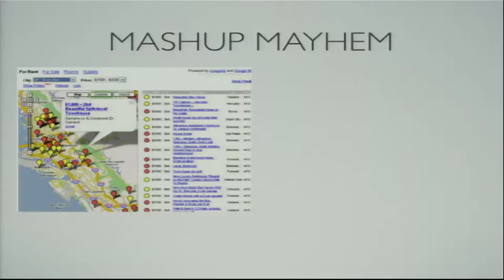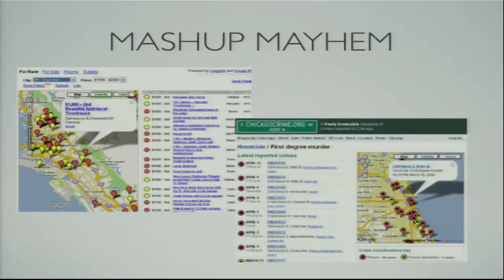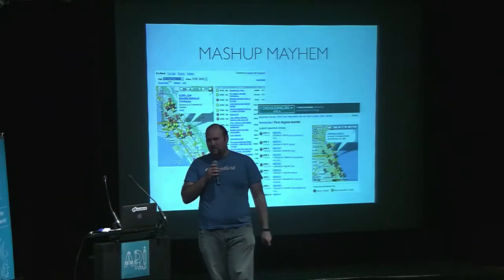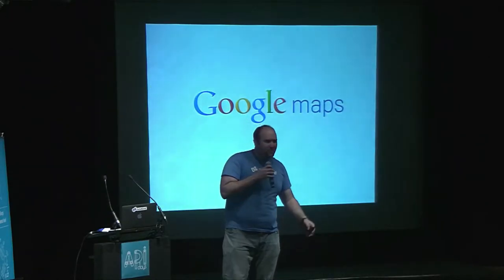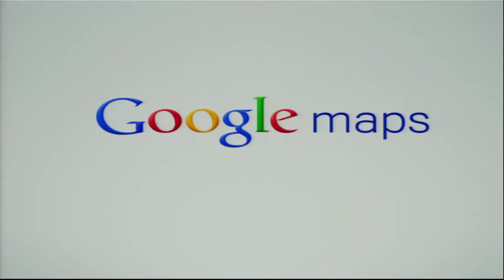A few years later we see something different. Anyone remember Housing Maps — housingmaps.com — and chicagocrime.org? They both started the map mashup craze, and they started actually before there was an official Google Maps API. In each case, they reverse engineered the Google Maps site to place their own pins on the maps. Shortly after, Google Maps came out with an official Google Maps API.